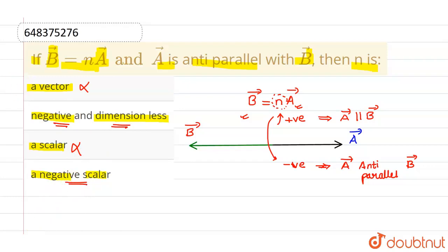Obviously, if two vectors are equal, then their dimensions must be same. Now, if the dimension of B vector is same as dimension of A vector, then n will be dimensionless.